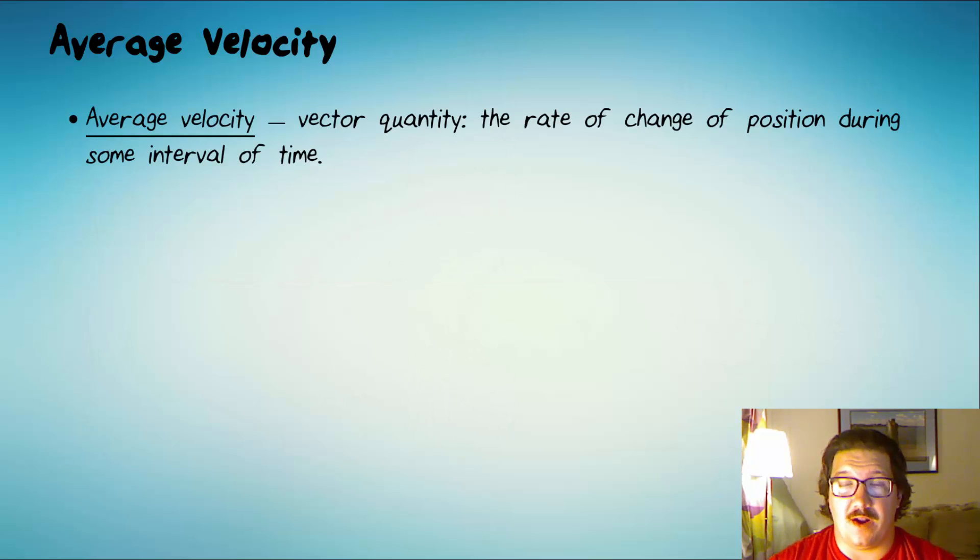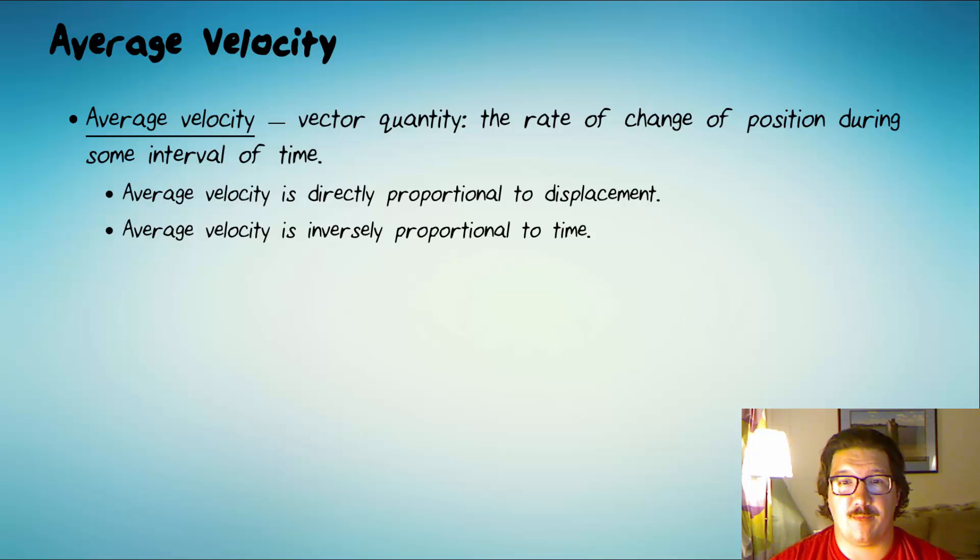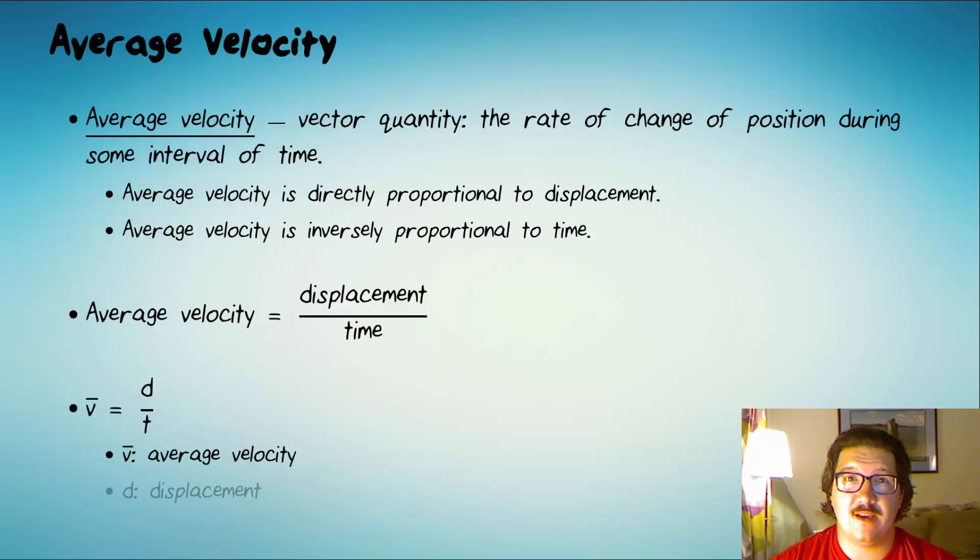Average velocity is a vector quantity, and it's the rate of change of position during some interval of time. We've seen that it's directly proportional to displacement and inversely proportional to time. The equation we can write for average velocity is displacement divided by time, and we'll see direct relationships in the numerator and inverse relationships in the denominator many times this year. We normally write it like this: V bar equals D over T, where V bar represents average velocity, D stands for displacement, and T stands for time.